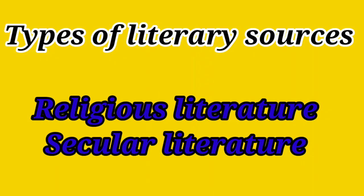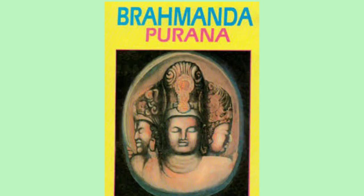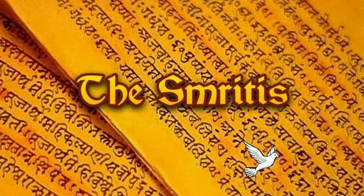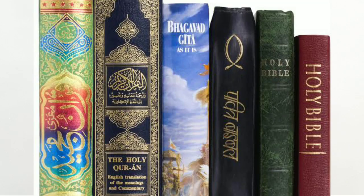Moving ahead with the types of literary sources. First, we will be describing religious literature. Anything which is in written form related to religious texts or religions is termed as religious literature. Religious literature basically includes commentaries or books written on beliefs mentioned in Smritis, Puranas, etc. These give us complete information about various religious texts.